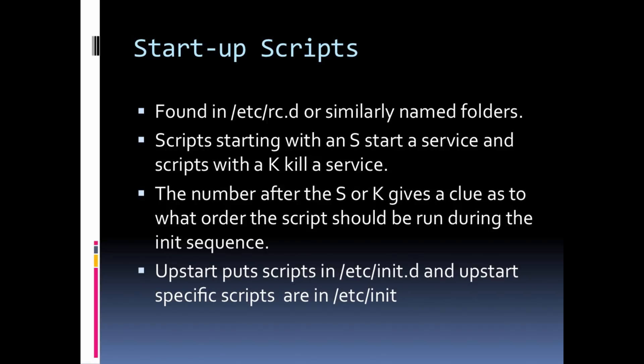The key point is: how do things get enabled for a given run level? You just run a run level, and a bunch of scripts in a folder get executed to enable or disable the services that are supposed to be on or off at that run level. While there's a lot going on, the basic theory isn't all that difficult. Let's explore some of these directories on the command line.